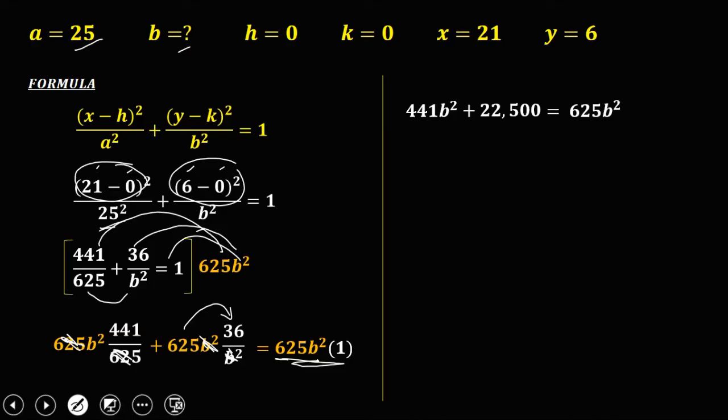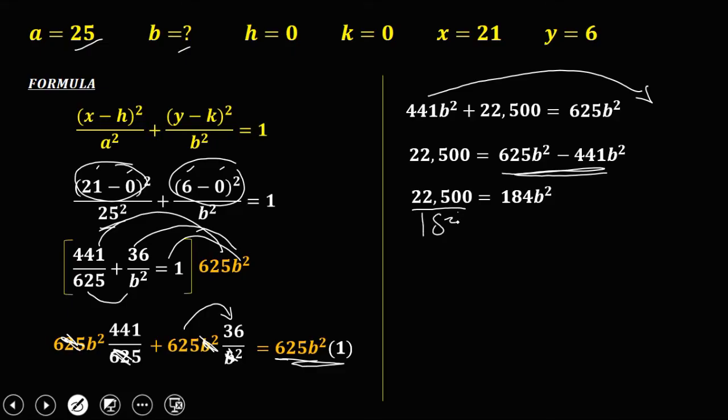Then to solve for b², transpose this 441b² to the right, so this becomes negative, then subtract. 625 minus 441, that's 184b². Then divide both sides by 184, so b² now equals 122.28.